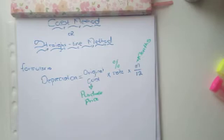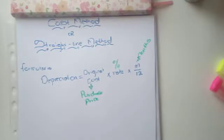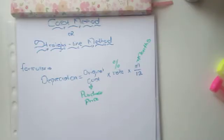The m represents the number of months in which we had the asset in our possession. So in a case where we purchased or sold an asset during the year, m refers to the months within the 12-month financial period during which we actually held the asset.